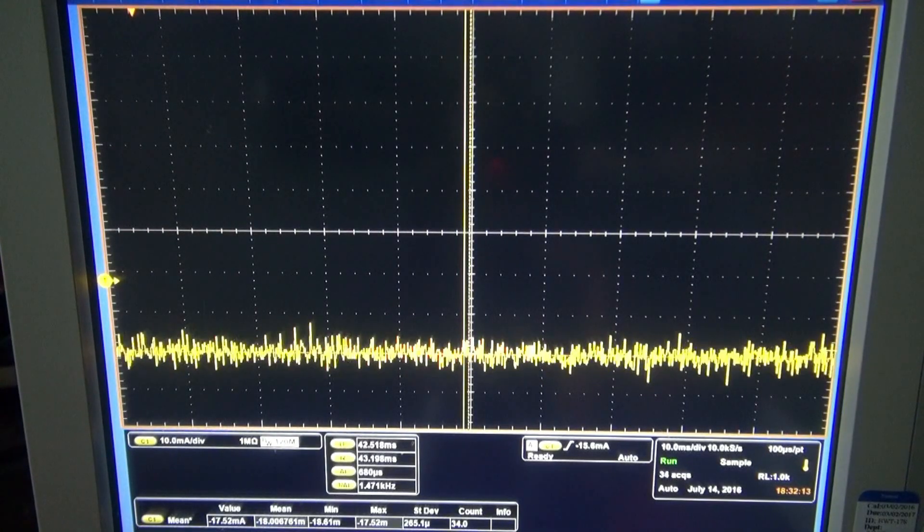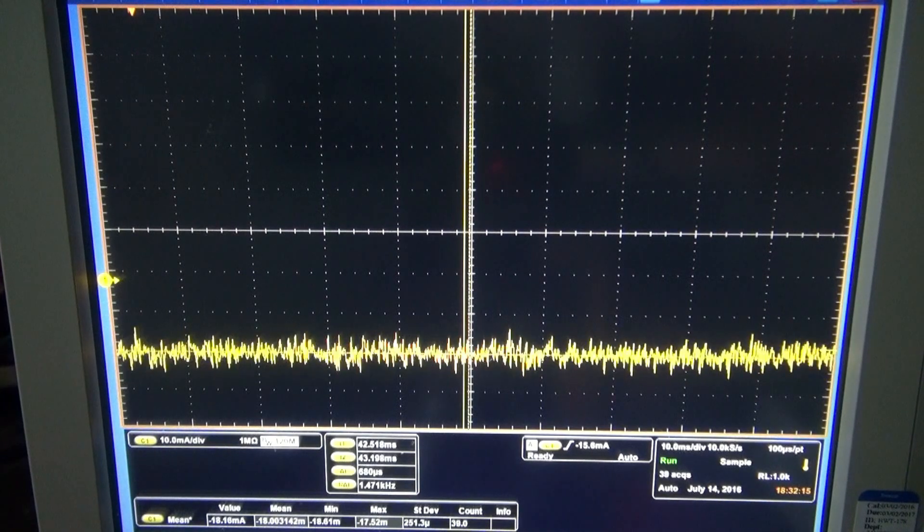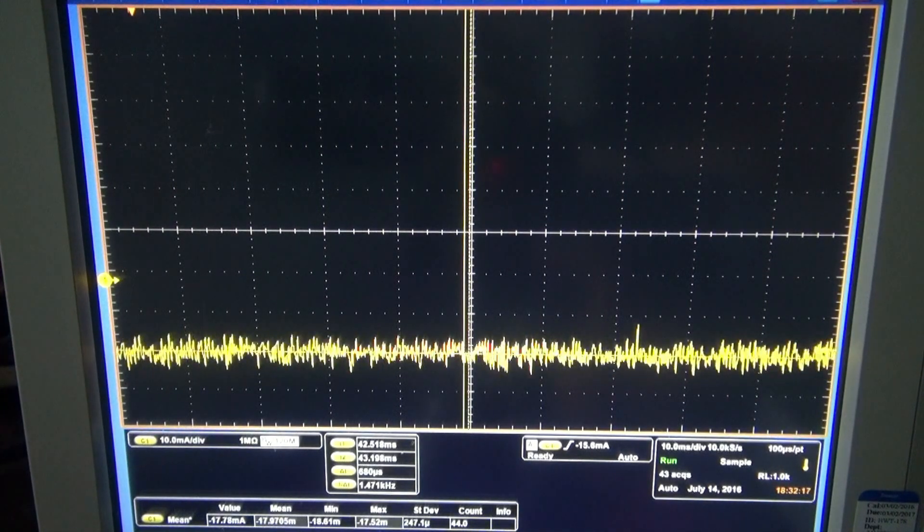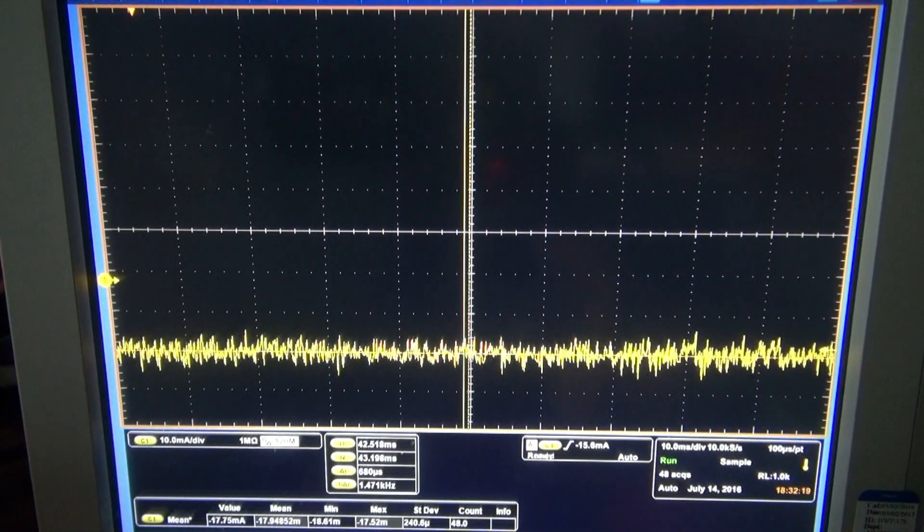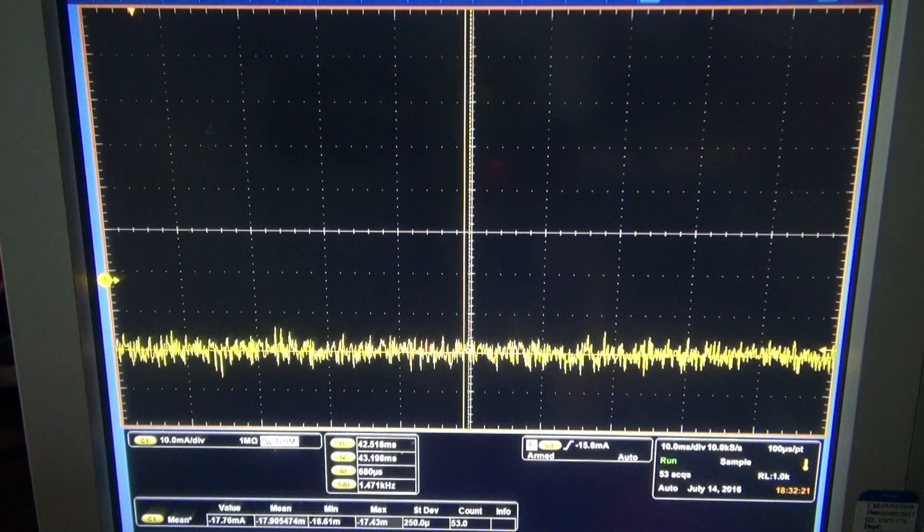All right, so let's watch the current on this GZ34 free running. I'm going to turn it on. We're at 10 milliamps per division.